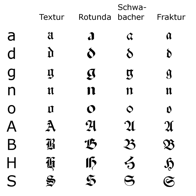Fraktur is sometimes contrasted with the Latin alphabet in Northern European texts, which is sometimes called the German alphabet, simply being a typeface of the Latin alphabet. Similarly, the term Fraktur or Gothic is sometimes applied to all of the blackletter typefaces.